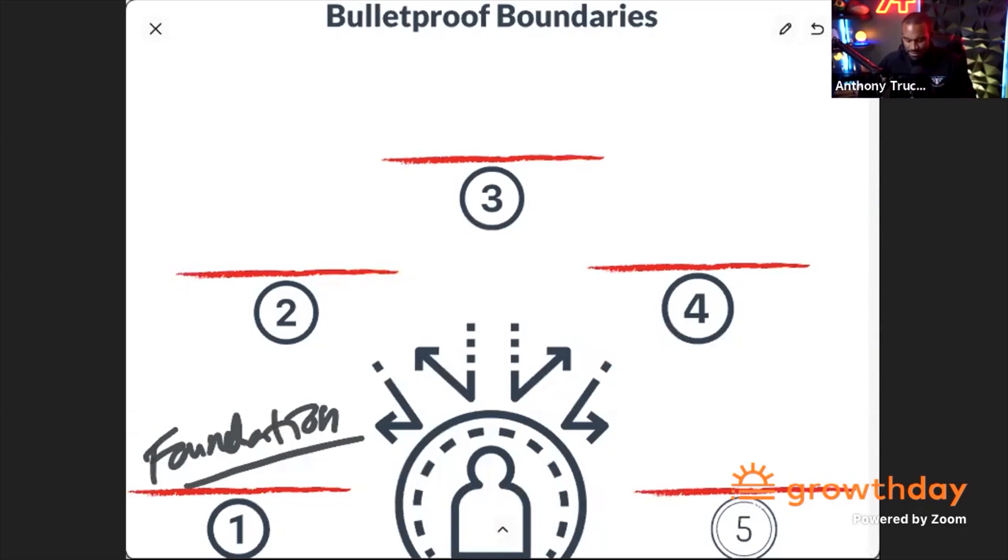Then what I do, I teach people, you got to put in what I call parameters. Now, think of it like this. If I'm on a road, and I'm driving somewhere, the parameters are the lines of the road. Now, a lot of people don't set the lines of the road. What can I go into and go out of?